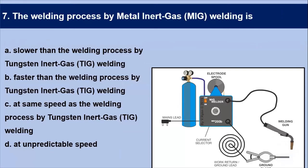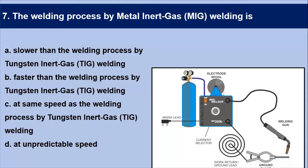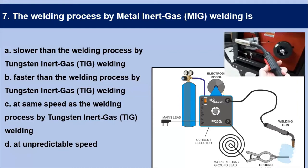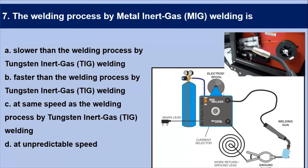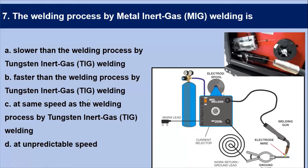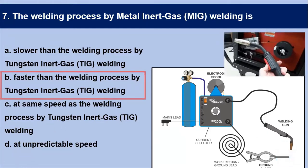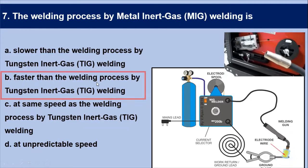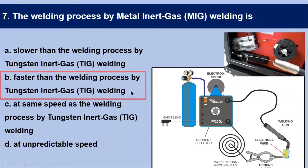Next question: the welding process by metal inert gas — MIG welding — is? In MIG welding, the consumable electrode is in the form of a wire reel which is fed at a constant rate through the feed roller. Because of its continuous feed, the MIG process is faster than TIG welding. So the answer is B: MIG welding is faster than TIG welding.